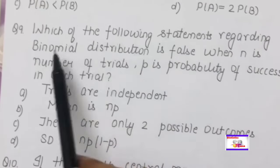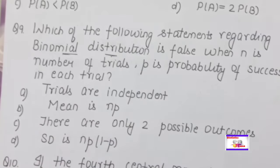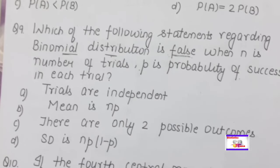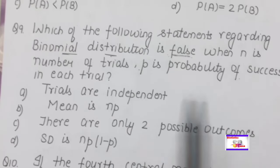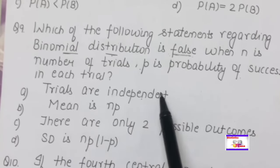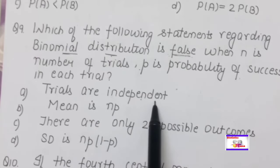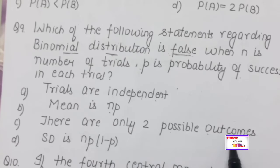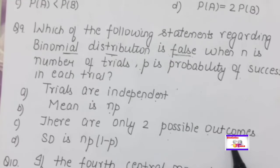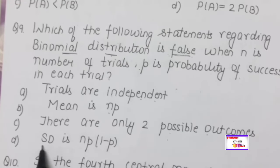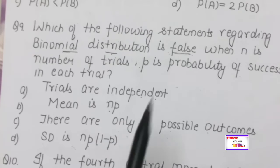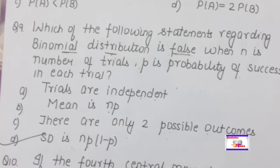Which of the following statements regarding the binomial distribution is false, where n = number of trials and p = probability of success? Recall: trials are independent (true); mean = NP (true); there are only two possible outcomes — success and failure (true); standard deviation = NP (FALSE — this is actually the variance; standard deviation should be √(NPQ)). So the false statement is 'standard deviation = NP'.